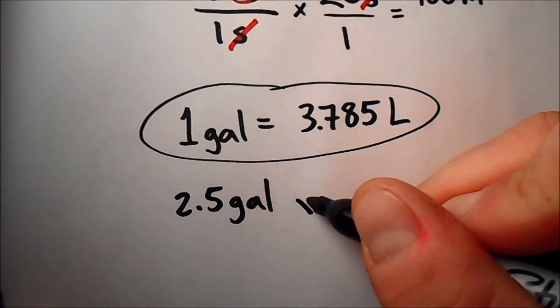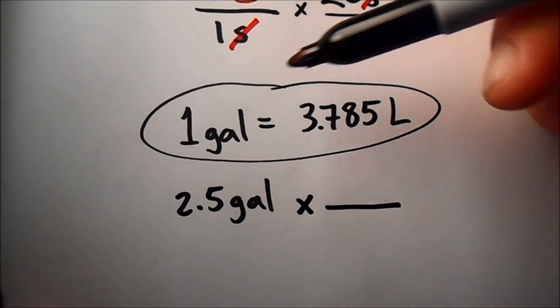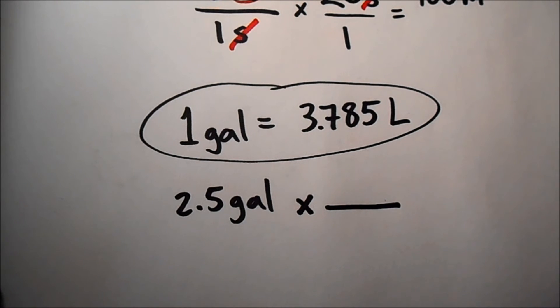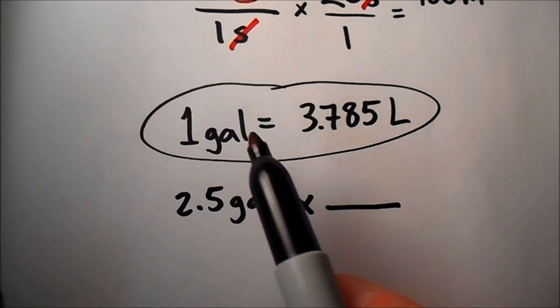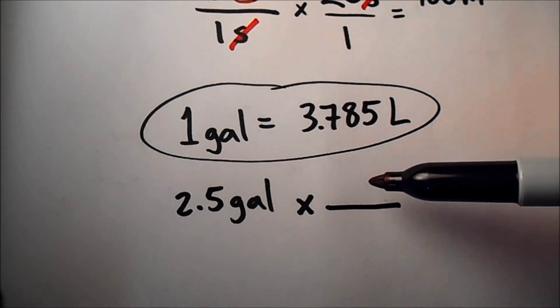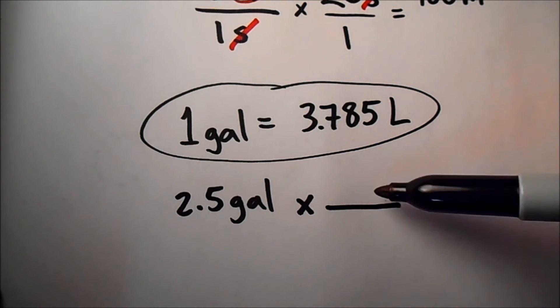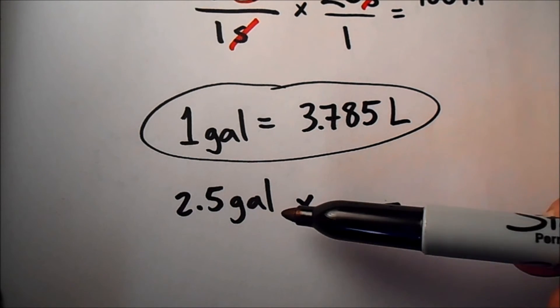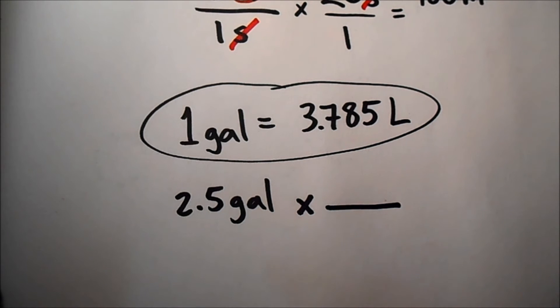Dimensional analysis can help us make sure to set up this problem correctly. This is our conversion factor. And so we're going to use that by multiplying a ratio of these two numbers. These two things are equal. So if I multiply by a ratio that contains those two measured values, then I'm not really changing my value of 2.5 gallons.